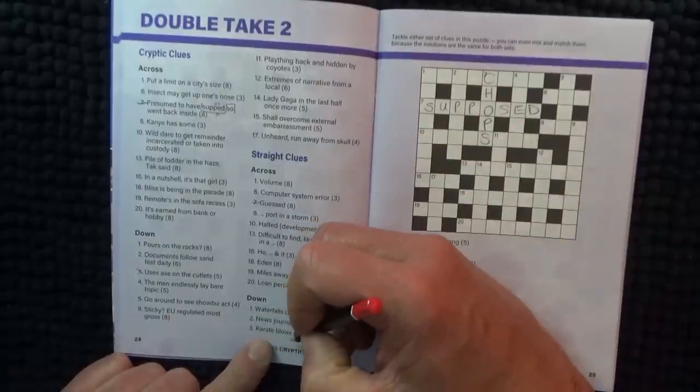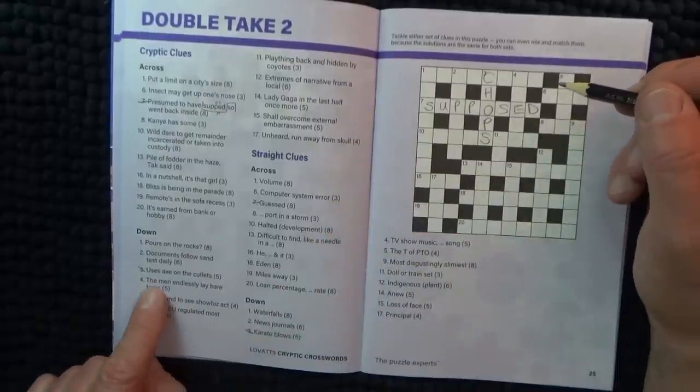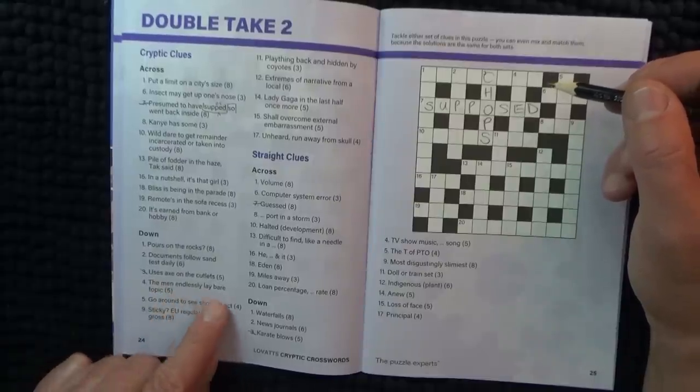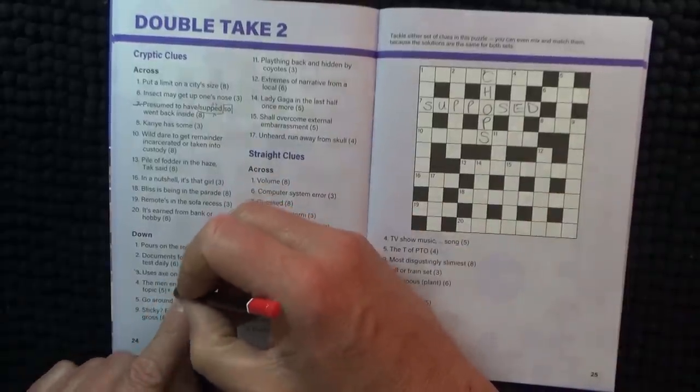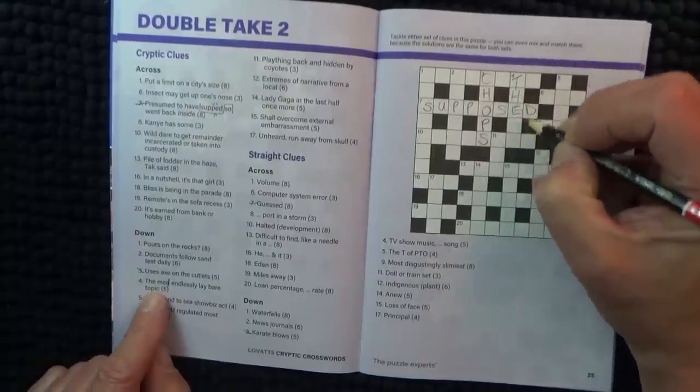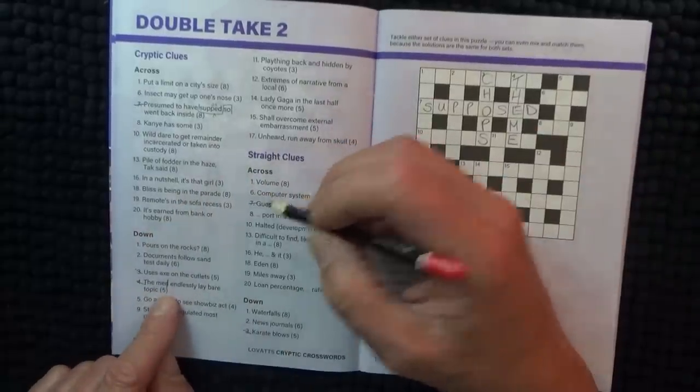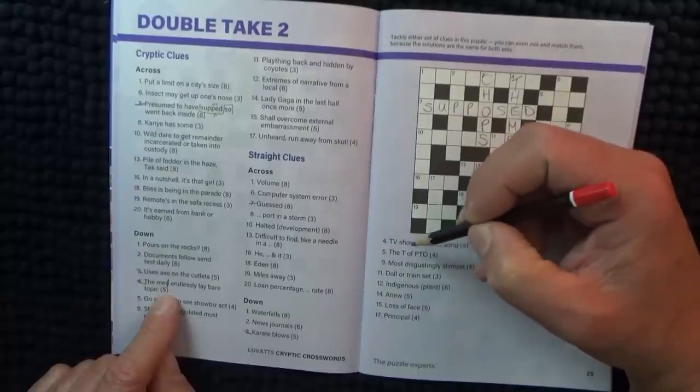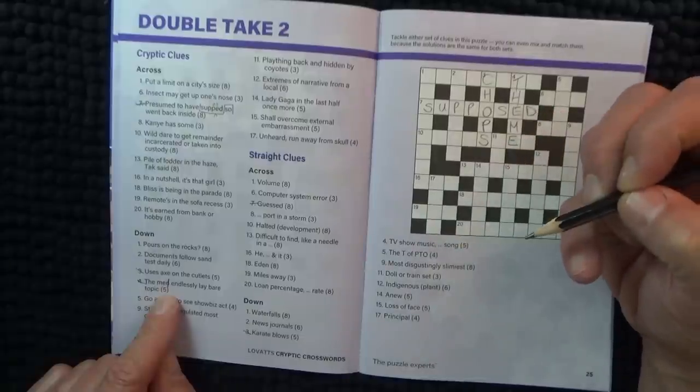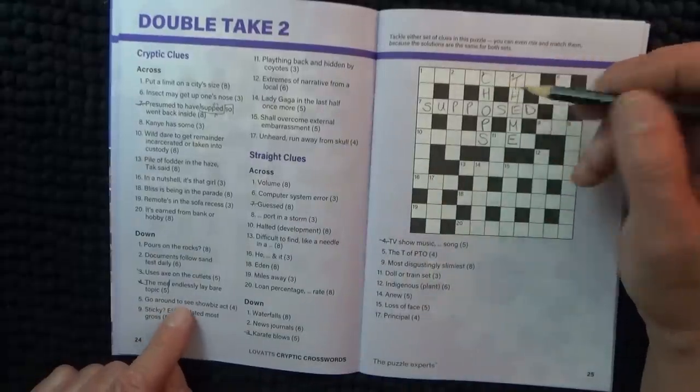And the cutlets are chops. And there we go, karate blows. For three down, which is chops. I'll try four down. The men endlessly lay bare topping. So if the men are endless then there's no N. The men. So it's going to be lay bare, topic. Topic. And TV show, music, song, scene. Yeah, that's right.